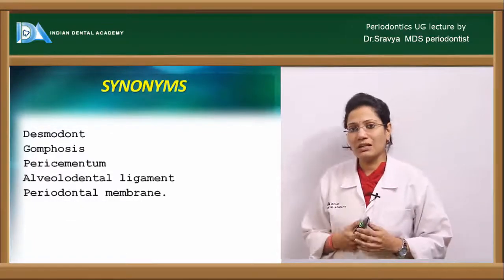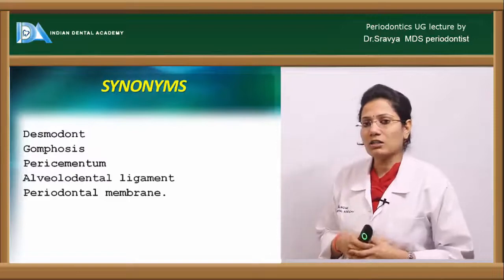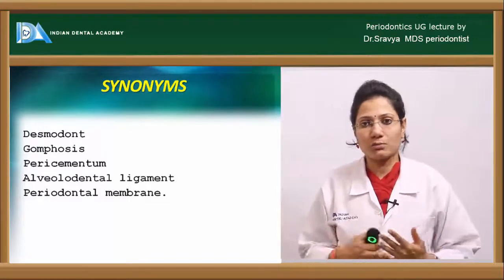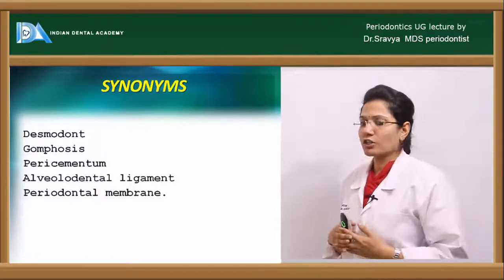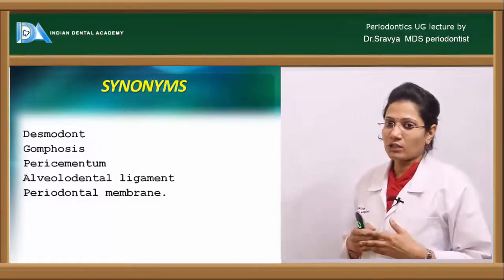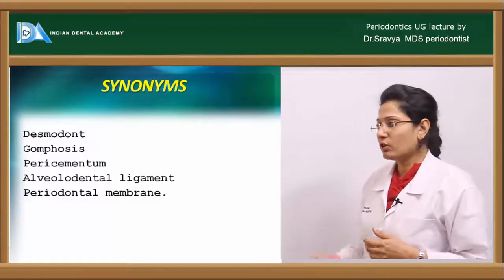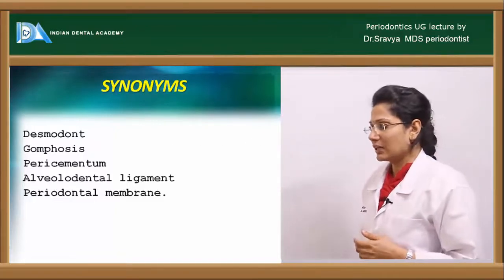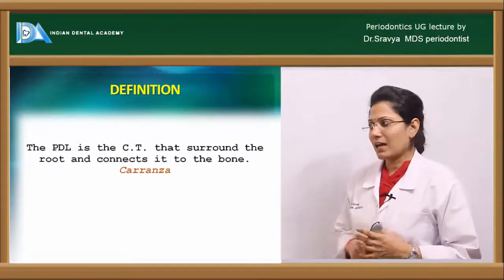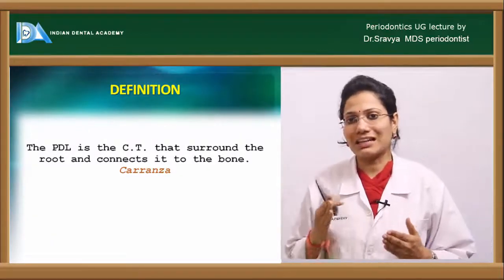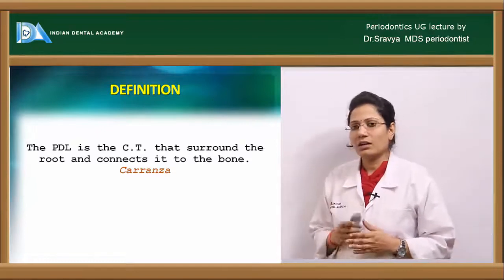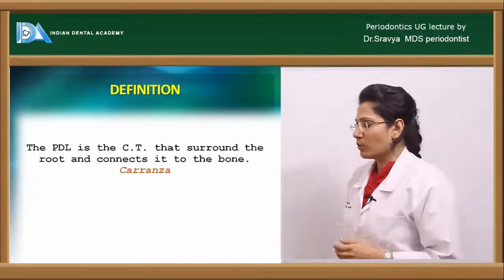The synonyms of the PDL or periodontal ligament seen in humans include desmodont, gomphosis, pericementum, periodontal membrane, and alveolodental ligament. According to Carranza, the periodontal ligament is defined as a connective tissue that surrounds the root and connects it to the bone.